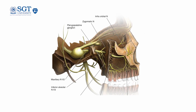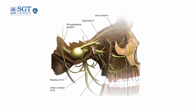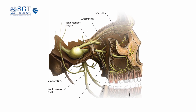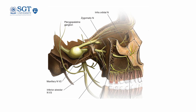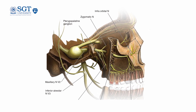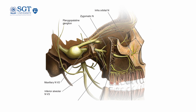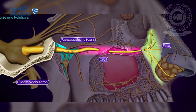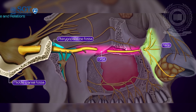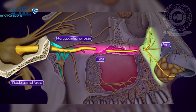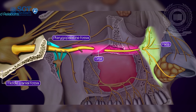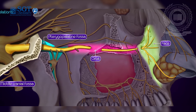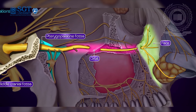The maxillary nerve, or V2 — the second division of the fifth cranial nerve, or the intermediate division of the trigeminal nerve — is purely sensory in function. It gives innervation to all structures in and around the maxillary bone: the mid-facial region, the lower eyelid, the side of the nose, the upper lip, the nasopharyngeal mucosa, the maxillary sinus, the soft and hard palate, the palatine tonsil, and the maxillary teeth and periodontal tissues.